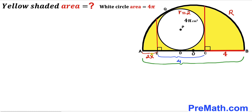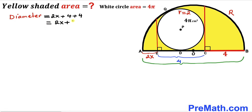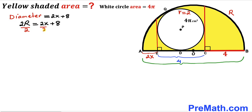The full length AB is the diameter of the semicircle, so the diameter = 2x + 4 + 4 = 2x + 8. Since the radius of the semicircle is uppercase R, we have 2R = 2x + 8. Dividing each term by 2 gives uppercase R = x + 4.